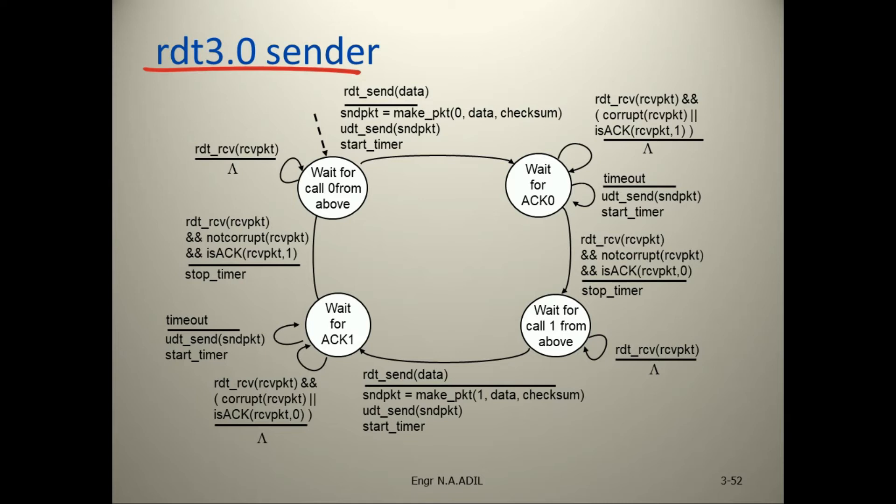If the receiver receives a corrupted packet and acknowledges received packet 1, the sender does nothing. If timeout occurs, the sender retransmits the packet and restarts the timer. When RDT receives the packet uncorrupted and acknowledges received packet 0, the sender stops the timer.